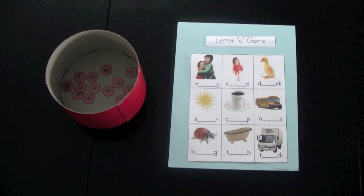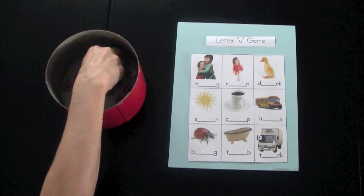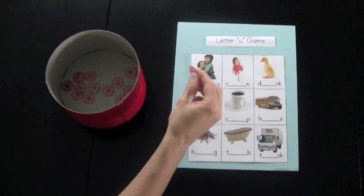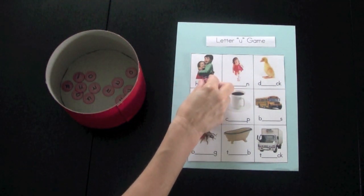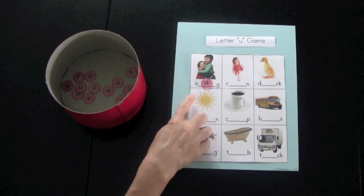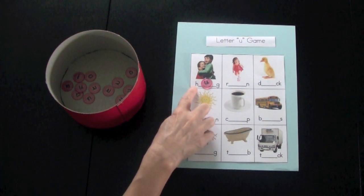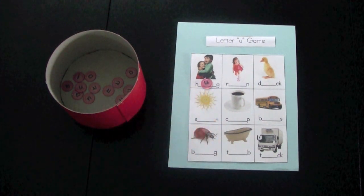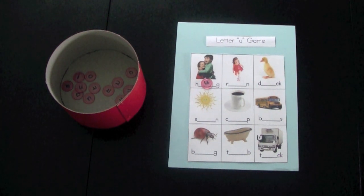Now I'm going to demonstrate how to play the game. Player one picks a bingo chip up. They have pulled the letter U. They would put this on the blank. Then using the picture as a clue they would say the word by stretching the sound. H-U-G. Player two would take a turn and they would put this on their game board. If they have not pulled the letter U they have to place it back into the container and then it is player one's turn again. And the game continues until one player has all the letter U sounds on their game board.